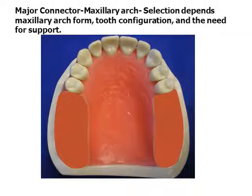In the maxillary arch, the major connector has the palate for additional support. Generally, the poorer the support from the teeth, the greater the area of palatal coverage employed. The framework should be constructed to cover the tuberosity. The major connector may demonstrate a U-shaped form and is always terminated anterior to the vibrating line.